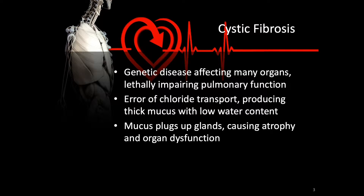One of the diseases that causes a clogging up of the airways is called cystic fibrosis. Cystic fibrosis is a genetic disease affecting many organs, lethally impairing pulmonary function, and causing impairment of many other organs. It is caused by an error in chloride transport, which means that the mucus has very little water and is thick. This thick, sticky mucus causes problems in the lungs, pancreas, liver, salivary glands, and testes. The mucus plugs up the airways in the lungs and the glandular tissues in non-pulmonary organs.